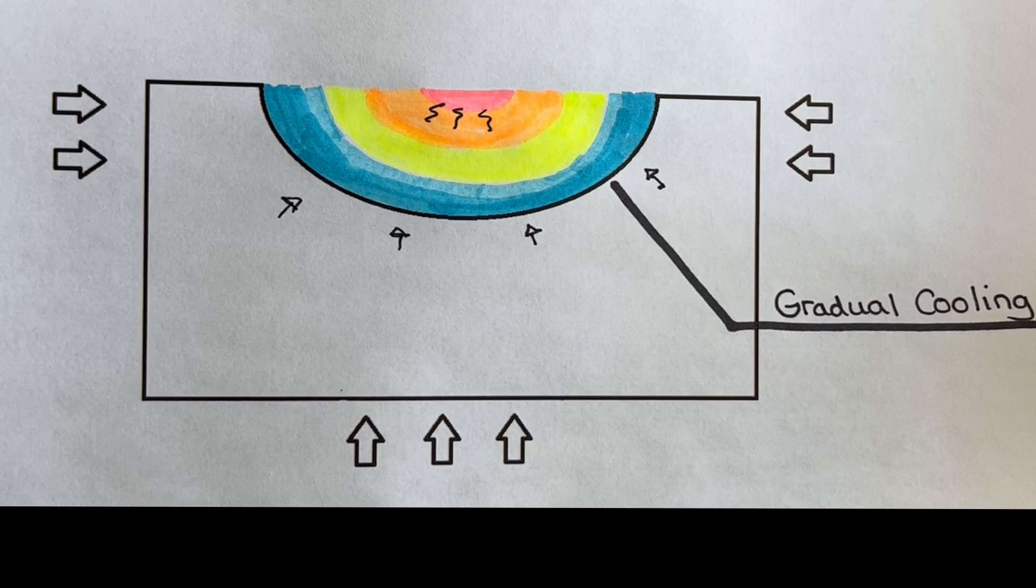The tension or pull created when the weld shrinks is what causes a weld to crack.